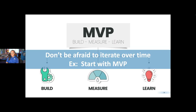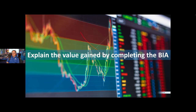Don't be afraid, with your BIA and your plans, to iterate things over time. Be comfortable developing a minimum viable product. Roll that out in a way that lets you get through your life cycle in the first year, and then think about how you can add more factors and make it more comprehensive over time. And make sure you're explaining the value that business teams are gaining by completing the BIA.